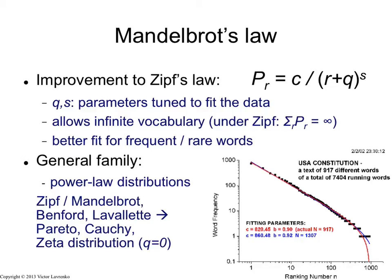Mandelbrot's law and Zipf's law are specific cases of a much more general family of distributions called power law distributions. These distributions arise in all sorts of places. Text is probably one of the first places where they were observed, but now these distributions are quite popular and you see them all over the place — in graph analysis where people analyze the connectedness of graphs, in social networks, and lots of other applications.